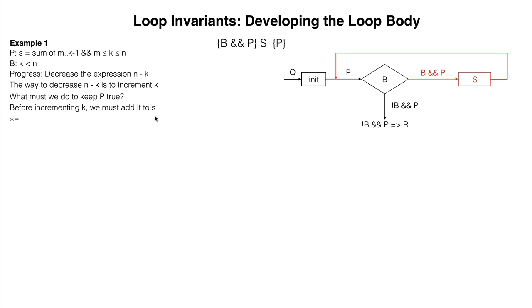Our repetend is: S becomes S plus k, K becomes k plus one. See how this keeps the invariant true. The execution of this repetend, given that B is true and P is true, terminates with P true.